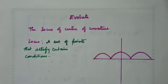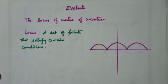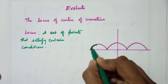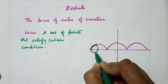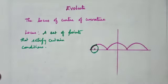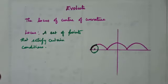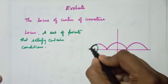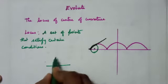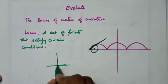So the locus of the center of curvature is called the evolute. Now, already we know what the center of curvature is. If you see this curve here, you fix a point, and at that point the curve has a circle of curvature. The center of that circle is the center of curvature. Now this curve will have a tangent line — a line that touches the curve at a single point.